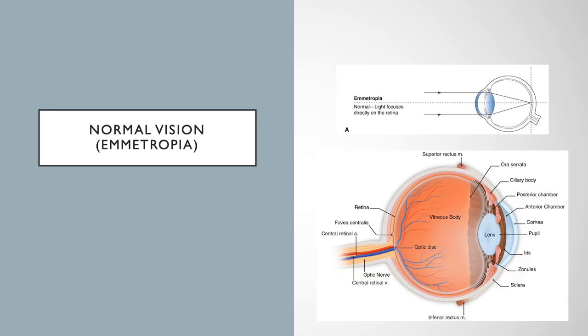Normal vision is called emmetropia. Light rays entering the eye must be bent, or refracted, so they can focus on the retina, where an image will be formed and sent to the brain through the optic nerve. This refraction contributes to our visual acuity. Most of our major refraction occurs in two places, the cornea and the lens.